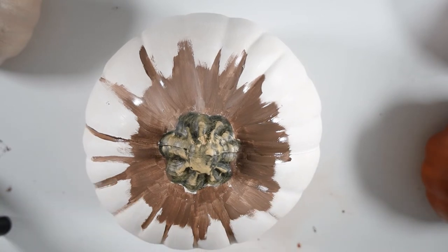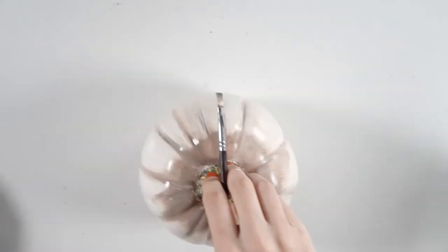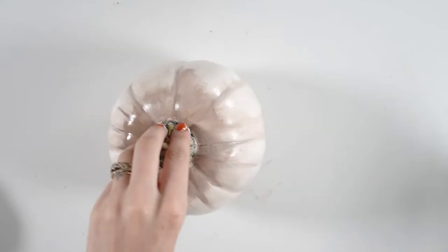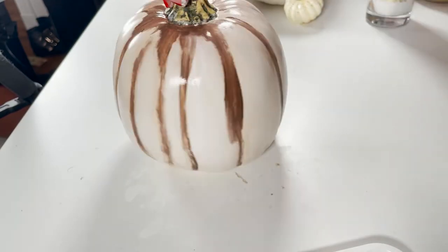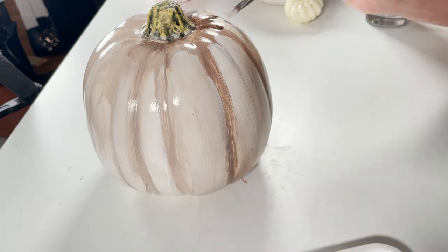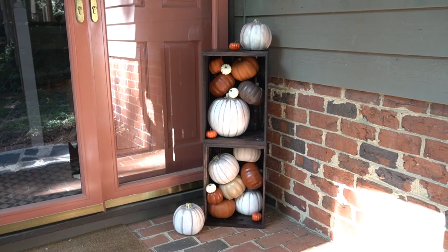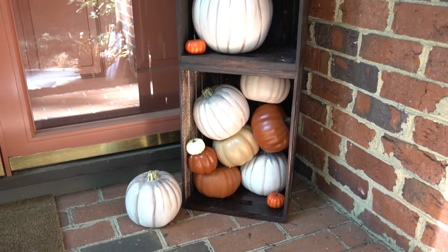But actually, you know what, I think I did read that white pumpkins are now a thing. People like genetically modified some pumpkins to be white. That's what people choose to spend their time doing. But you know what, hey, I guess I can't judge. I'm sitting here painting fake pumpkins to look more realistic. That is what I'm choosing to spend my time doing.